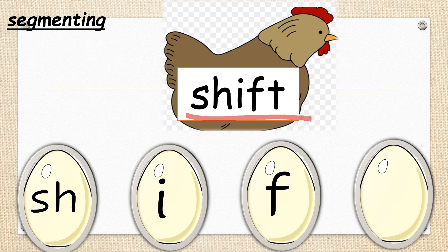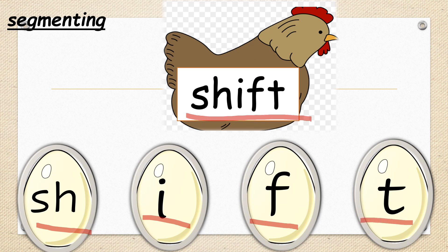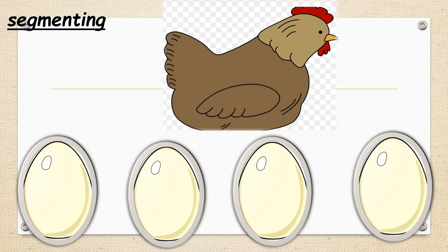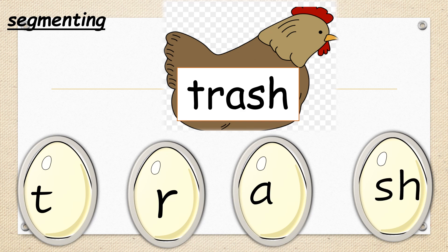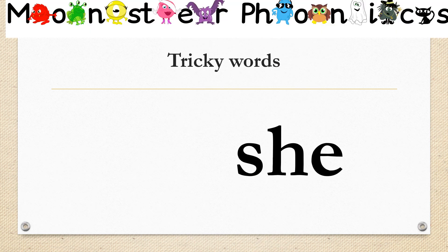Next we have 'shift.' How many sounds are there? The first sound is SH, next I, then F, then T. Well done — shift has four sounds. Great one! Next word: trash.